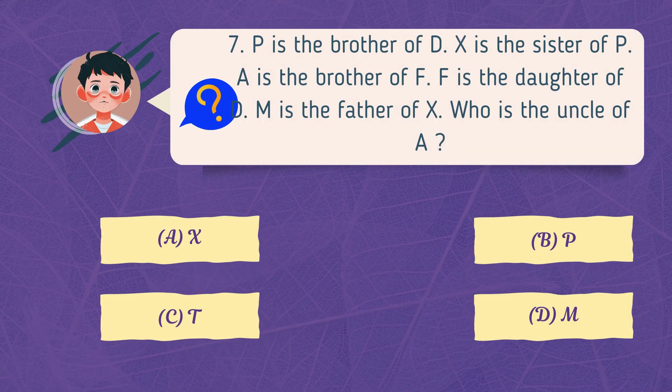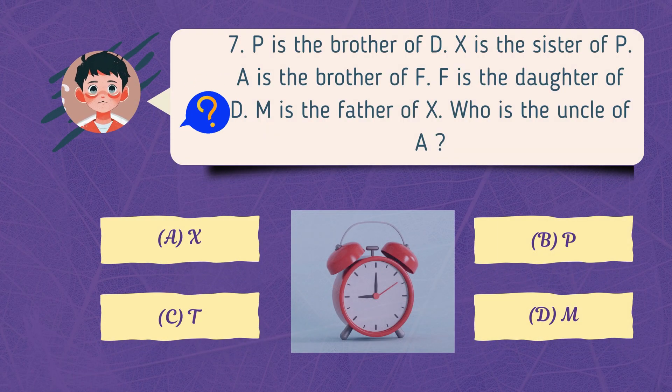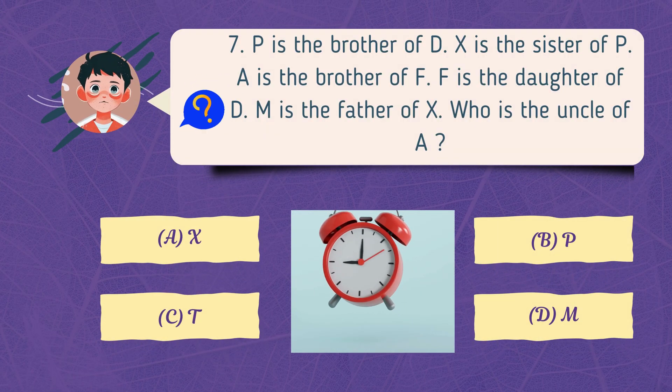P is the brother of D. X is the sister of P. A is the brother of F. F is the daughter of D. M is the father of X. Who is the uncle of A?